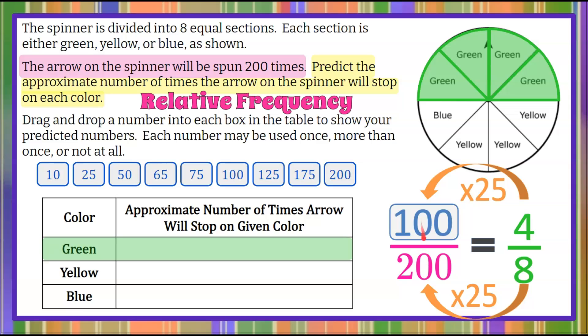100 out of 200 simplifies to one out of two, as does four out of eight. This forms a proportion. These are equivalent ratios. So we know that we can expect a relative frequency, if we spin 200 times, that 100 of those times will be green.